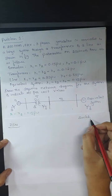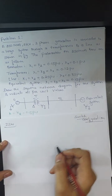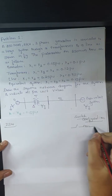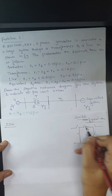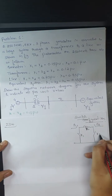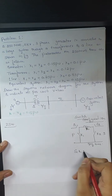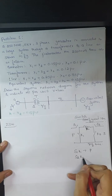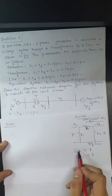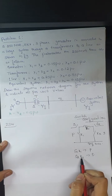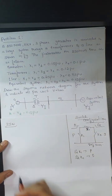For reference, I'll write the switch configuration for understanding the transformer zero sequence network. There are two switches on the primary side (S1, K1) and two on the secondary side (S2, K2). S1 and S2 are series switches used for star connection; K1 and K2 are considered for delta connection. Based on this switch configuration, we draw the zero sequence network.